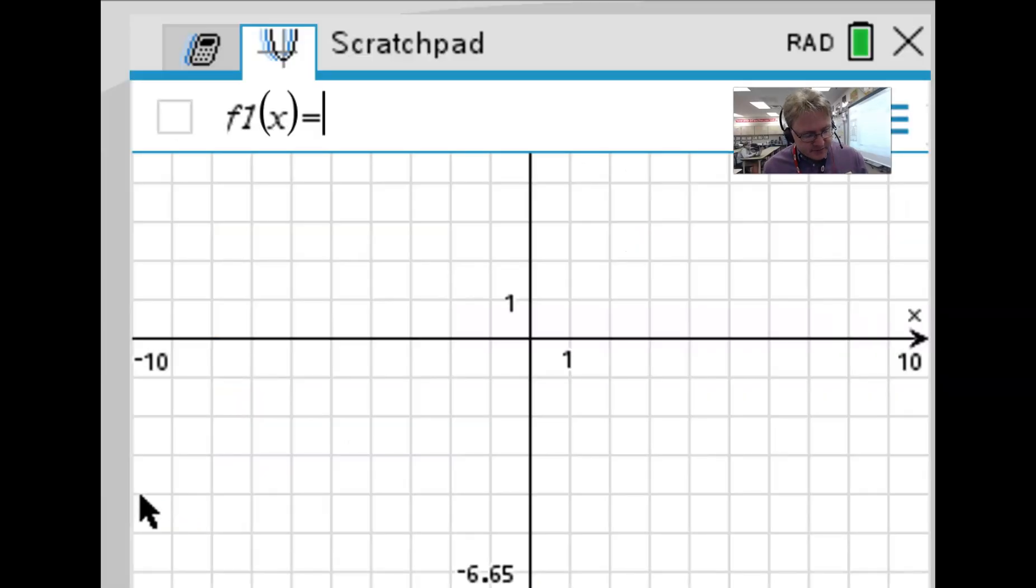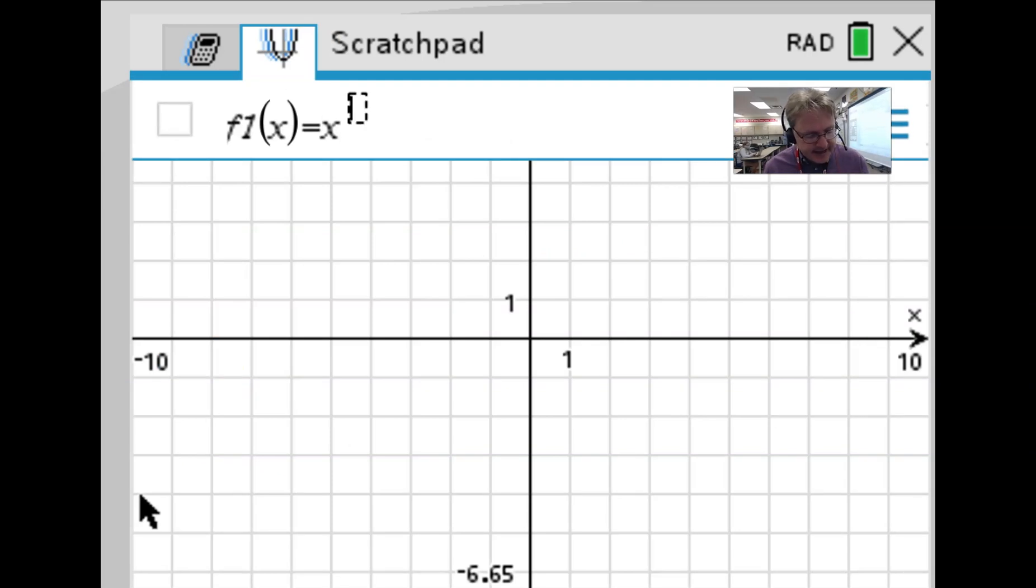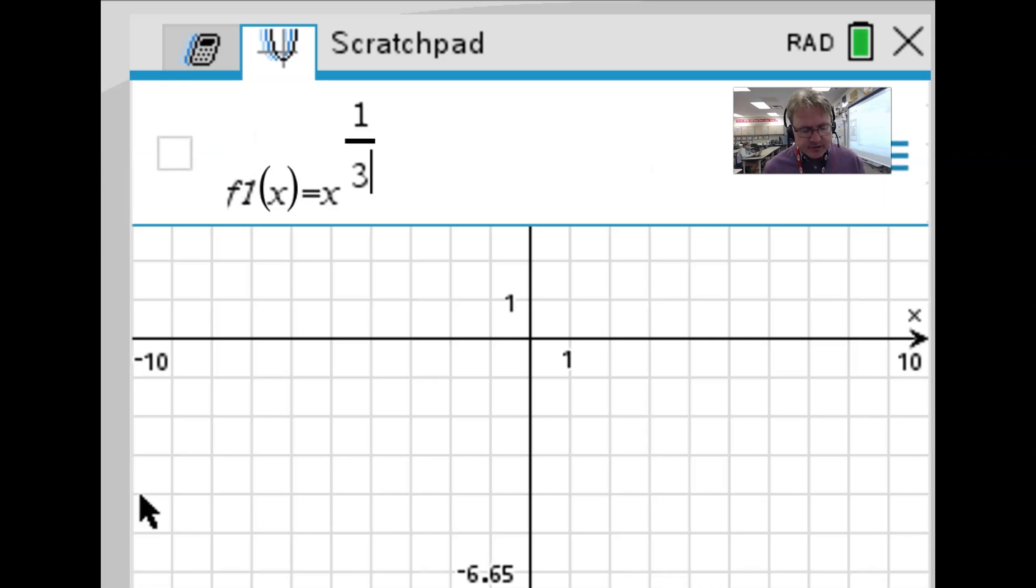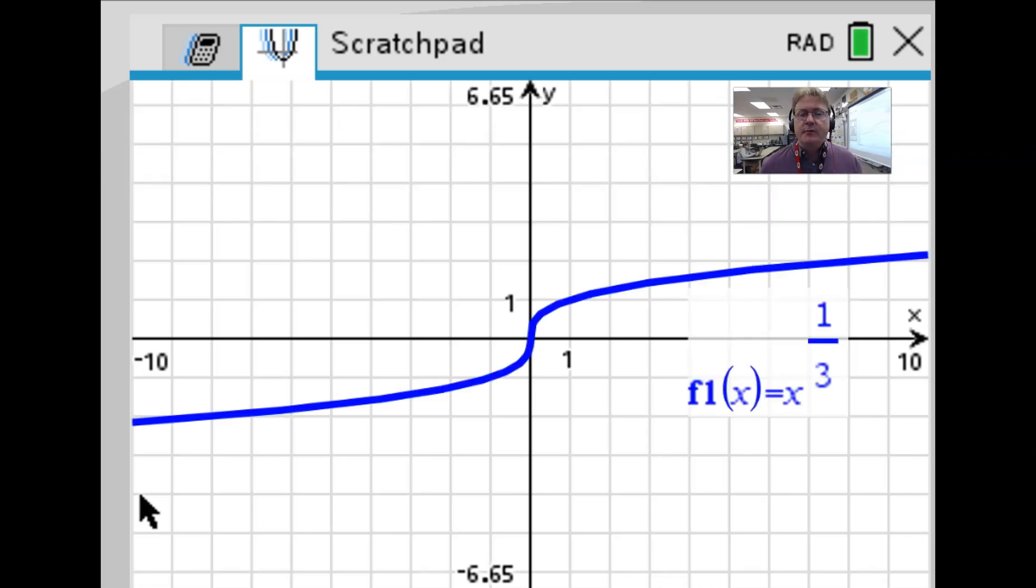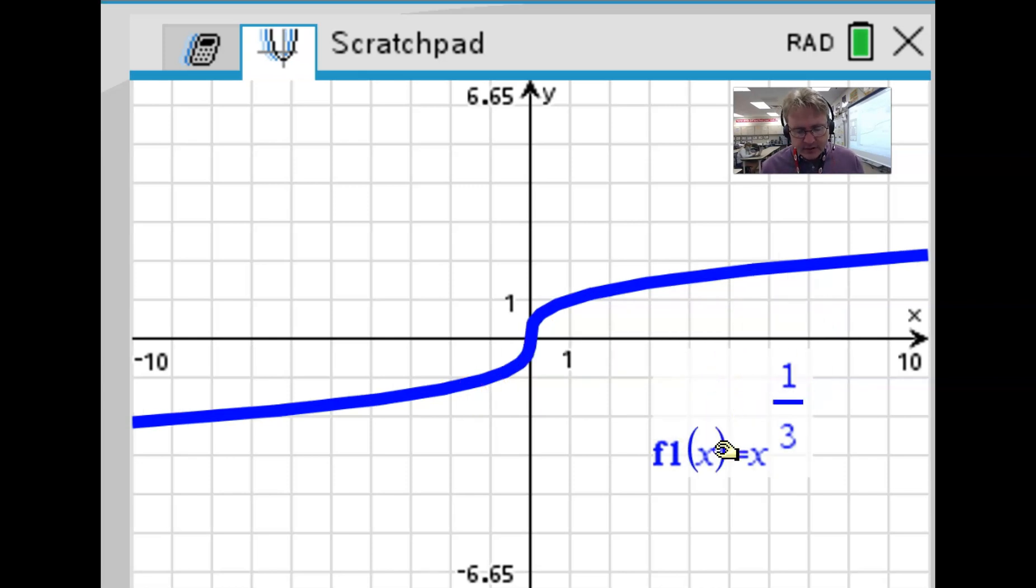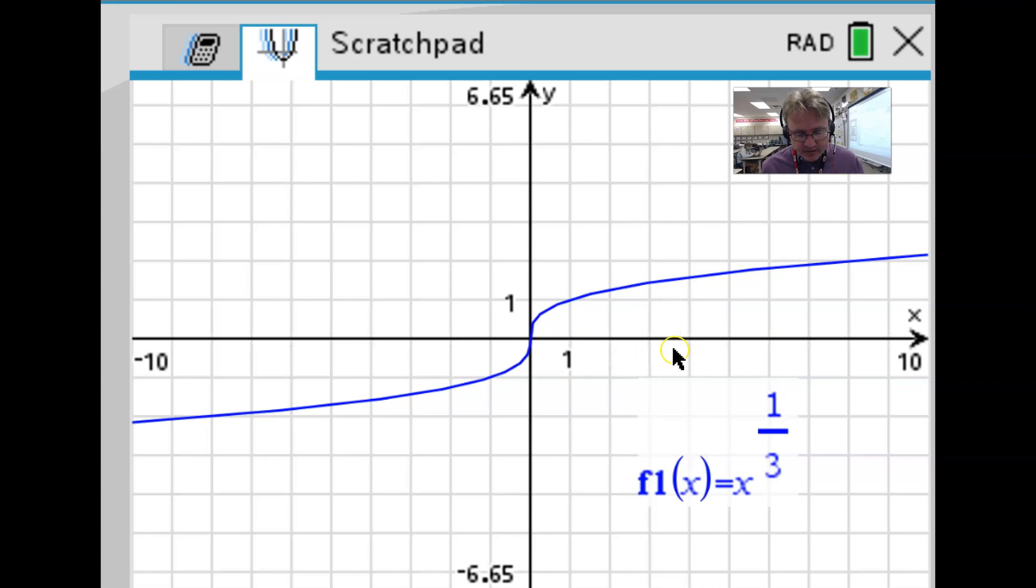So here we are with our graphing software. I'm going to input the function x raised to—let's go ahead and use a nice fraction exponent—one-third power, and this is what we see. A few things we might notice: there are some fairly nice ordered pairs like (0,0) and (1,1) and even (-1,-1), but we're going to be pretty hard pressed to find another nice ordered pair unless we go all the way out to say 8 and maybe 2 as the y value, because we know the cube root of 8 equals 2.